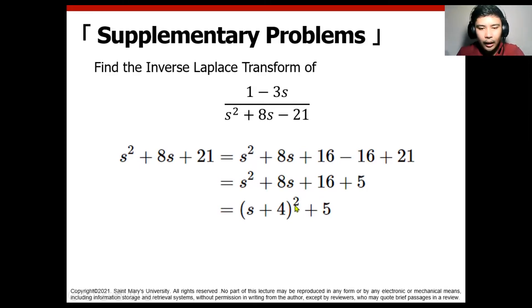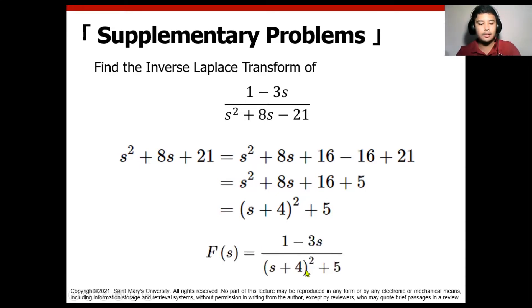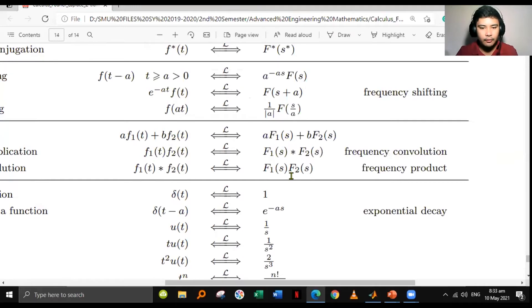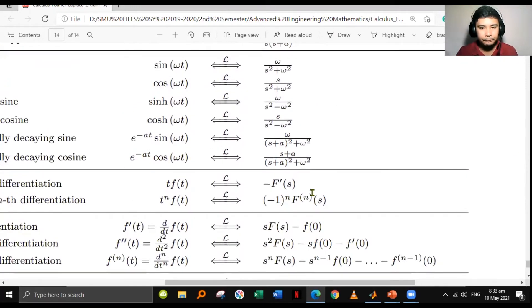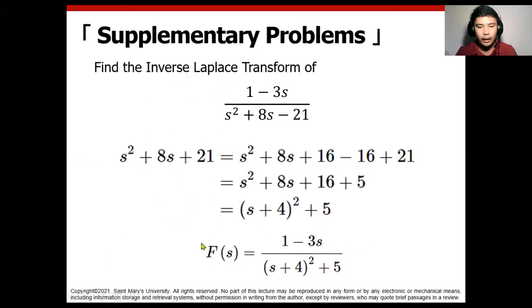To arrive at 4, just take the square root of 16. The remaining term is plus 5, so the denominator becomes (s+4)^2 + 5. Looking back at our tables of transforms, we can notice a resemblance. From this denominator side, there exists a resemblance with either e^(-at) sin(ωt) or e^(-at) cos(ωt). Either of these two Laplace transform pairs can be used to solve our function.